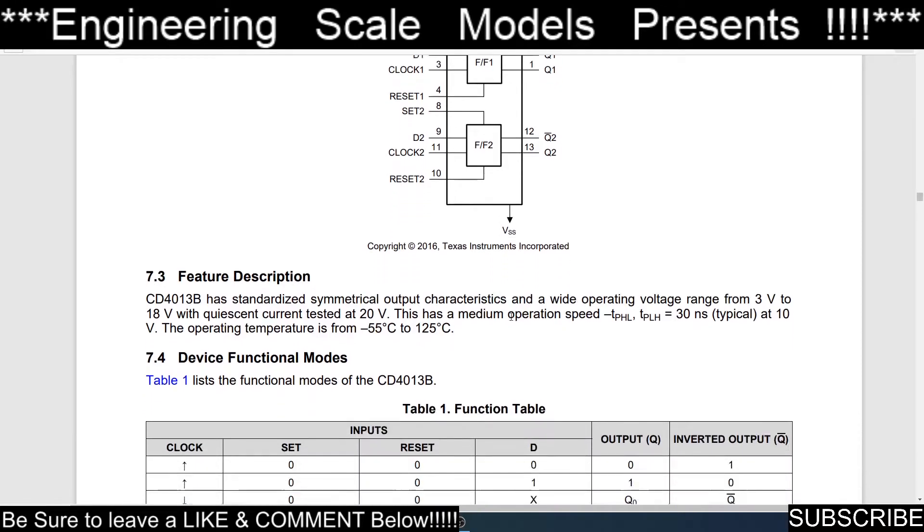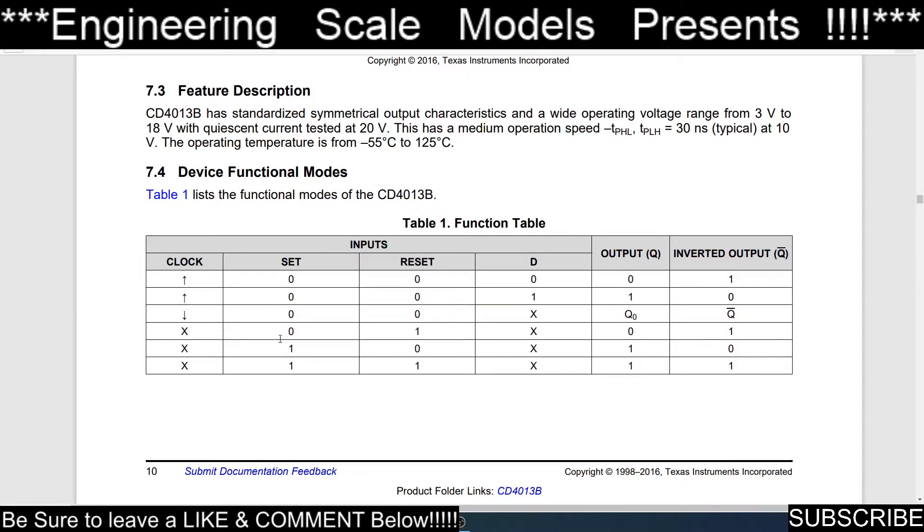So you can technically use the set and reset pins. If you put a high on reset, it'll reset it. If you put a high on set, it will set the Q to high. But we don't want to use those functions. So if you look at this here, this is the function table. If you look at a clock pulse of high and set is zero low and reset is low, if data is low you get a low output and an inverted one. But if the clock pulse hits and data is high, it'll latch a one and a zero on the output. Now if the clock goes down and both are zero, that's just whatever Q is, you'll get the inverse of Q.